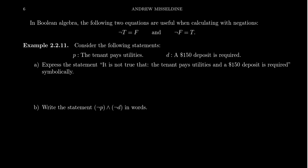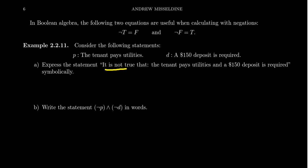Consider the following, and we're going to do this with some compound statements because it gets more complicated. Take two primitive statements: P — the tenant pays the utilities — and D — a $150 deposit is required. These might be conditions that a tenant would sign when they sign a lease for a new apartment. So can we combine them together? Express the statement: it is not true that the tenant pays utilities and a $150 deposit is required. We have to make sure we combine them using parentheses because order of operations matters.